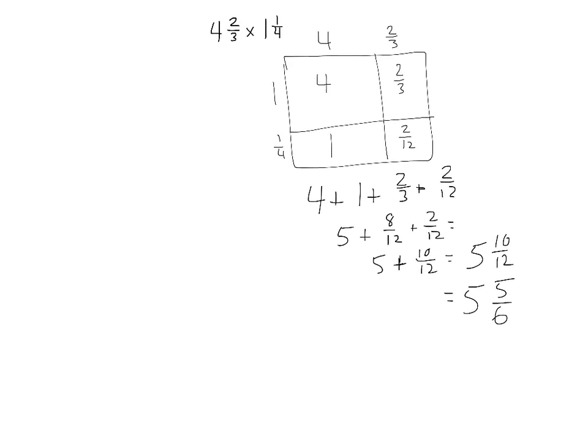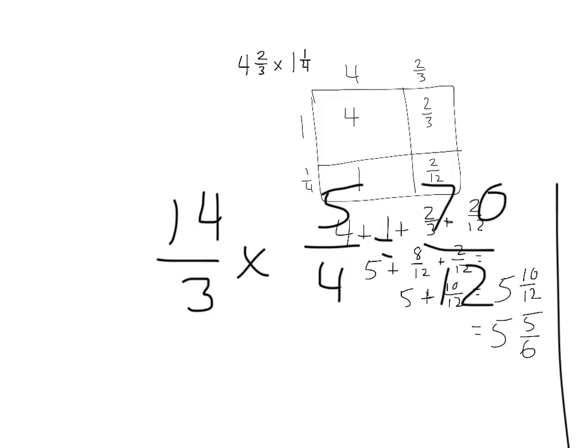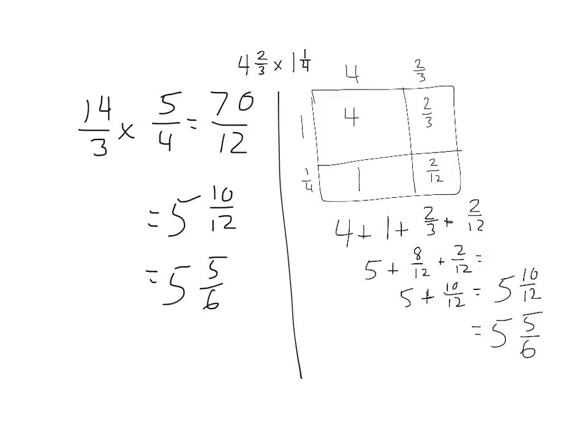Again, if I wanted to prove that model or test it out with our numerical model, our shortcut, 4 and 2 thirds would be 14 thirds times 5 fourths. So that's going to be 70 twelfths. If we take that, we have 5 times 12 is 60. So that leaves us with 5 and 10 twelfths, which can be simplified to 5 and 5 sixths. So, again, we end up proving that we can have two ways to do the same thing. One, the numerical model, much quicker. But the model on the right really didn't take us that long and really helped us break it down and make it a little simpler, and explain why we do what we do.